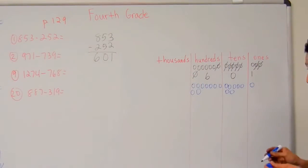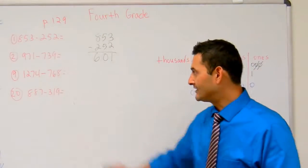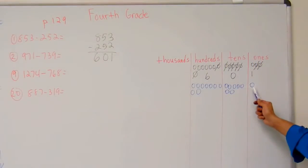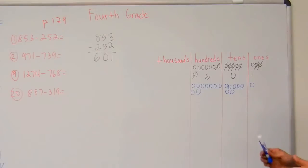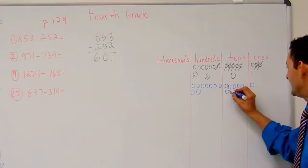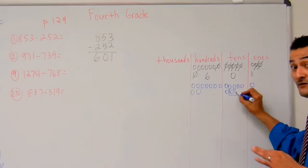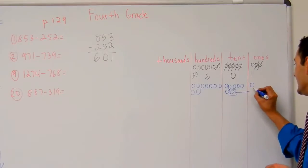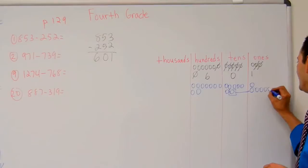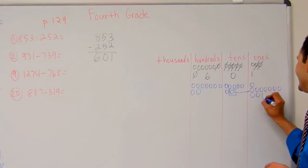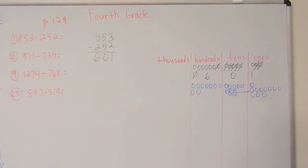Now what I'm going to do is subtract. Let's start with the ones place. I have to take away nine — I've got a problem. What I'm going to do is grab this ten and move it over to the ones place. So now I'm going to have ten ones.